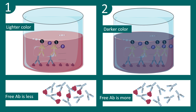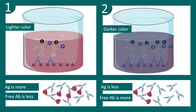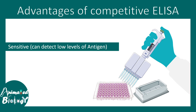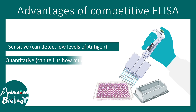So by looking at the color, we can understand whether the antigen concentration is more or less. Using a standard, you can get the exact concentration of antigen in the patient sample. Overall, this competitive ELISA technique is pretty sensitive — it can detect very low levels of antigen and is highly quantitative. It tells us not only whether an antigen is present, but also how much is present — whether it is at a low level or a higher level.